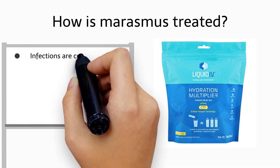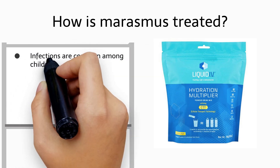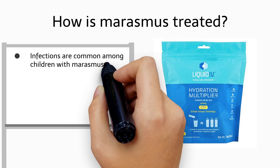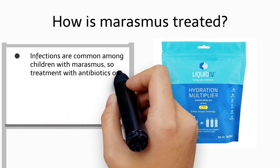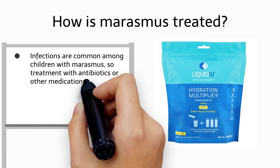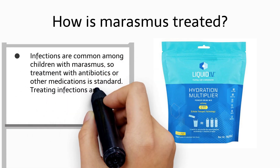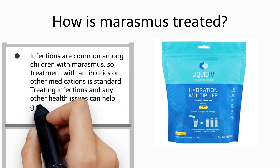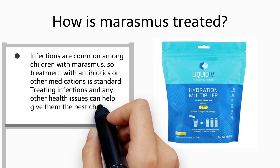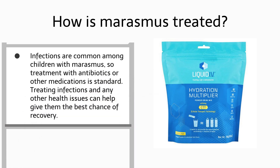Infections are common among children with Marasmus, so treatment with antibiotics or other medications is standard. Treating infections and any other health issues can help give them the best chance of recovery.